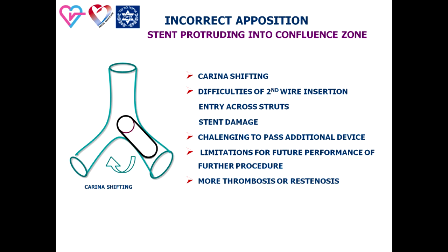Stent protrusion into the confluence zone is associated with non-optimal stent-to-vessel apposition and presents challenges to passage of a balloon or other device during the current procedure or in the future, as well as development of stent thrombosis or restenosis.